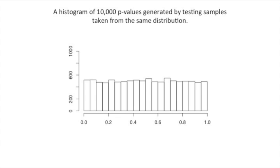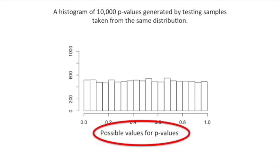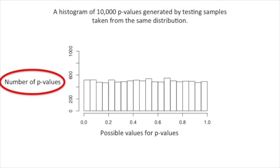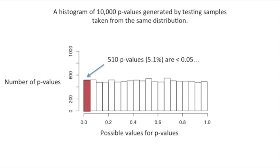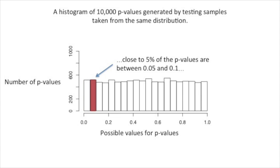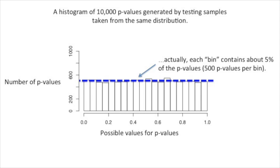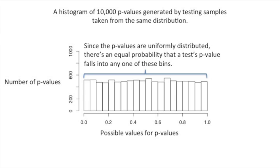Here I've drawn a histogram of the 10,000 p-values generated by testing samples taken from the same distribution. On the x-axis we have possible values for p-values; on the y-axis we have the number of p-values in each bin. 510 p-values, or 5.1%, are less than 0.05. Close to 5% of the p-values are between 0.05 and 0.1. Actually, each bin contains about 5% of the p-values — about 500 p-values per bin. Since the p-values are uniformly distributed, there's an equal probability that a test p-value falls into any one of these bins.